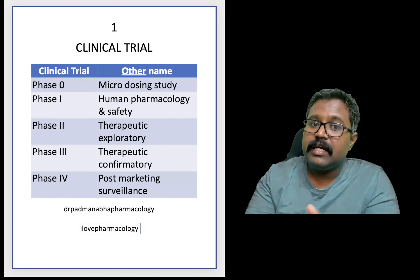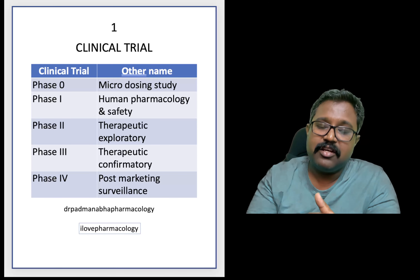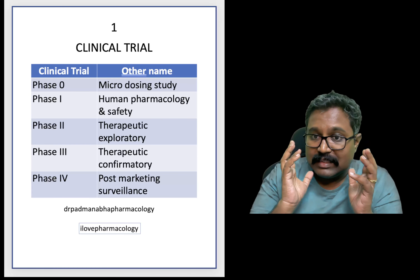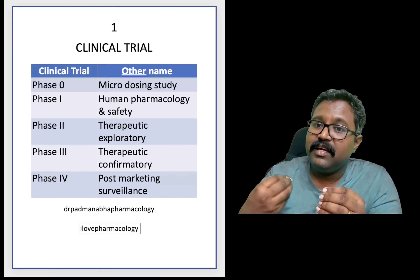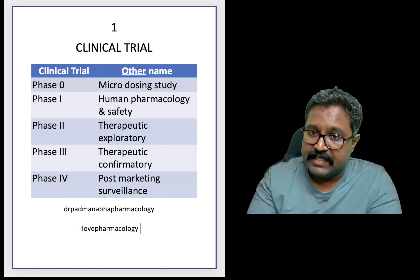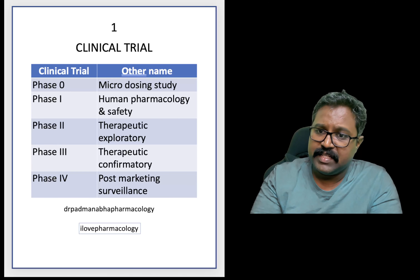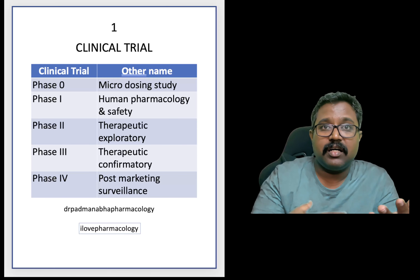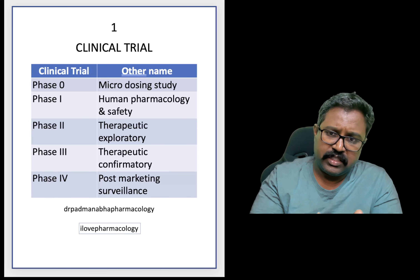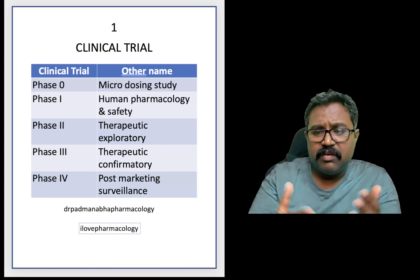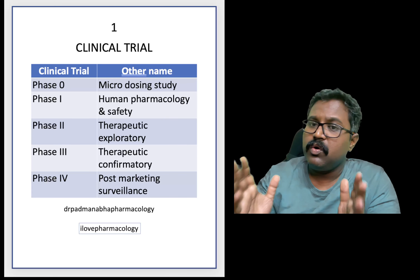Once phase 3 is over, it will be taken up for phase 4 — the marketing stage — where you are going to see post-marketing surveillance and check whether any adverse drug reactions can occur, any other benefits exist, or any other indications are there. You also study the pharmacodynamic and pharmacokinetic parameters with respect to children, pregnant women, and the elderly population in a larger setting. Phase 4 is also called pharmacovigilance.